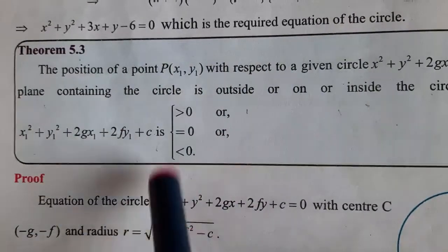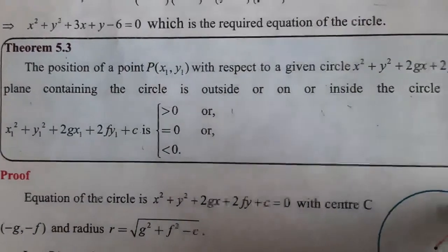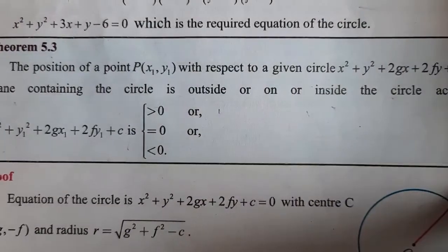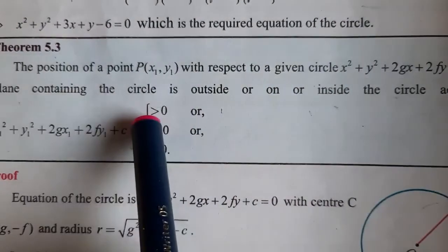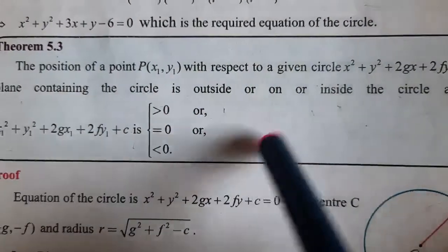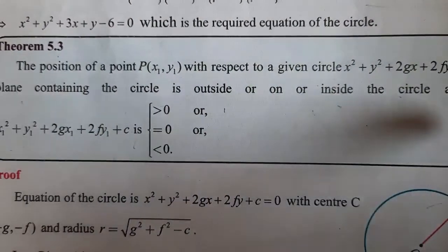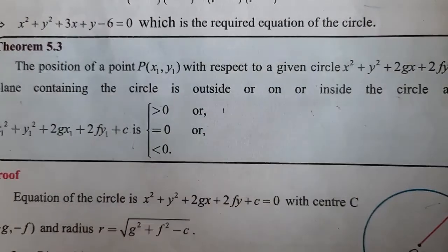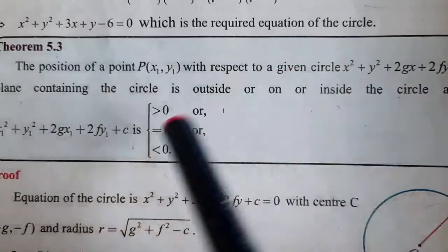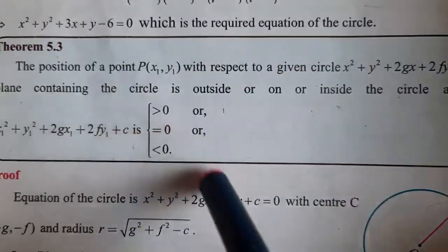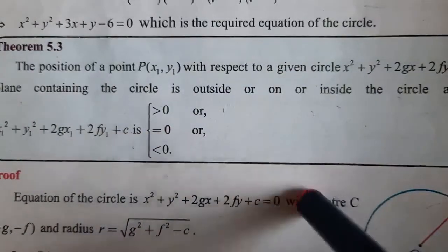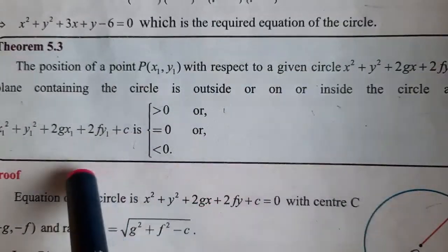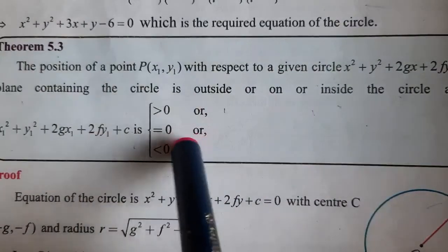This is the theorem we are going to prove. We are finding the position of a point with respect to a circle — where a point is located relative to a given circle. Let us now prove this.